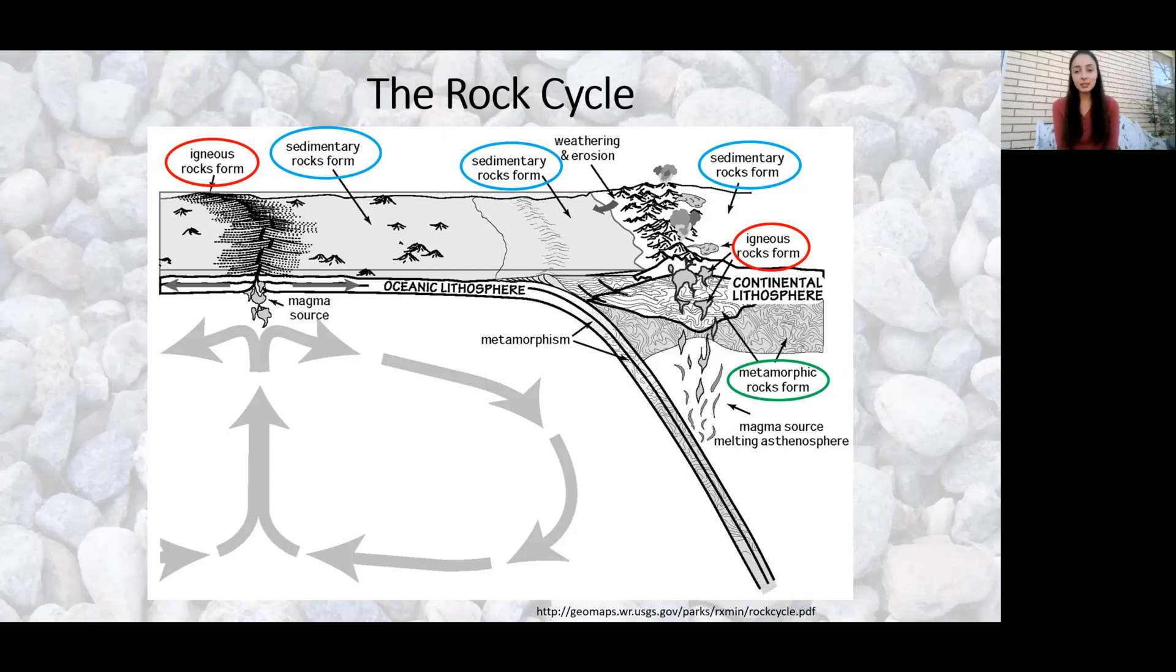This new crust is igneous because, like we said, igneous rocks are what form from cooling magma. Sedimentary rocks can form on the ocean basin where sediment is accumulating and being recompacted and lithified. Lithification is just the combination of compaction and cementation. Cementation is necessary to stick the pieces of sediment together into a new rock.